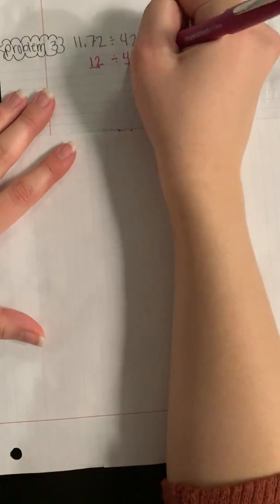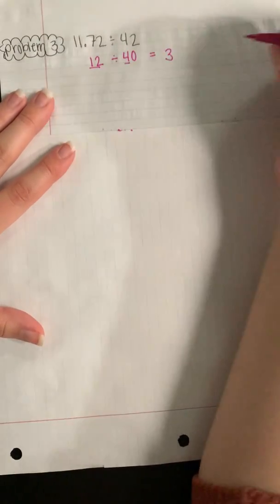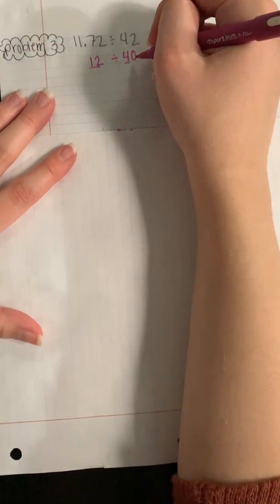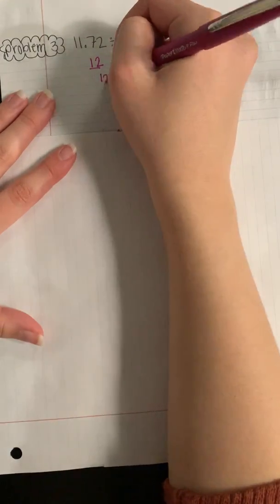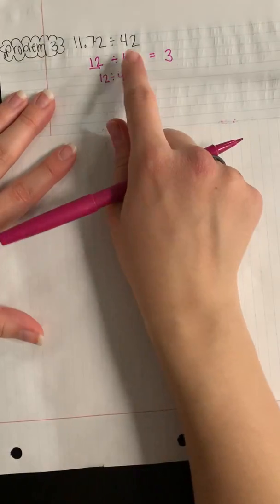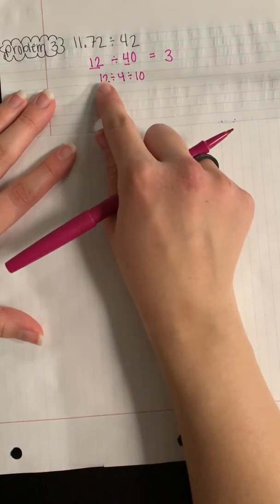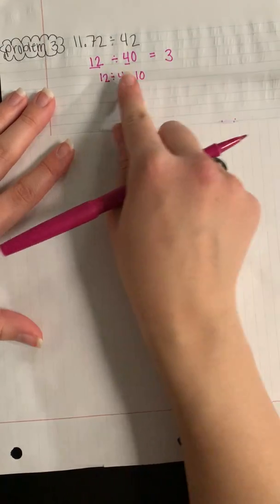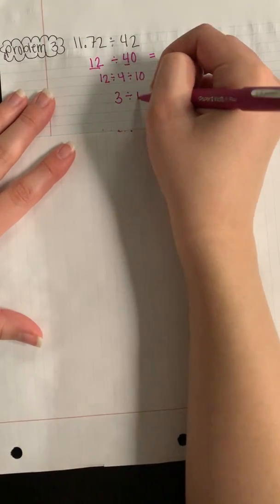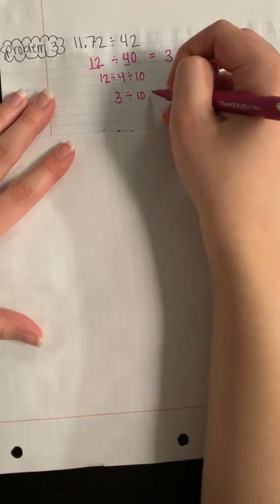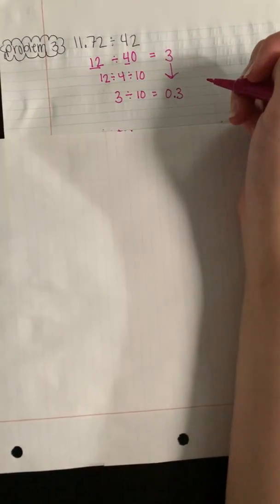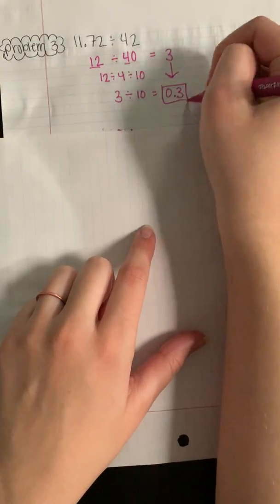12 divided by 4 is equal to 3. And then when I divide by 4 first, I'm really doing this: I'm breaking the 40 up into 4 divided by 10. So 12 divided by 4 is our 3, and then I need to divide my 3 by that 10 still. So that is how this turns into 3 tenths as our estimated quotient.